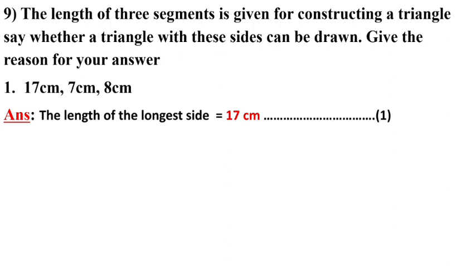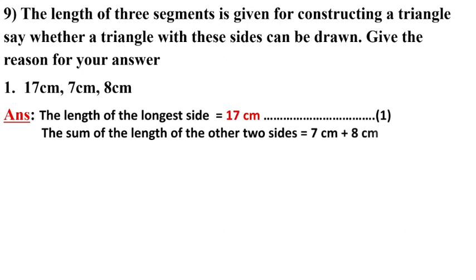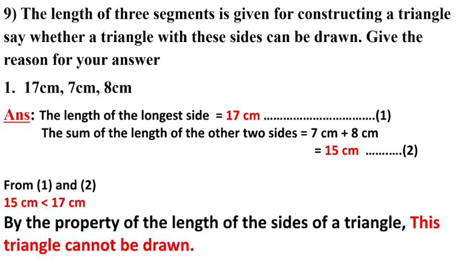Give the equation number 1. The sum of the other two sides are 7cm plus 8cm. Here we get 15cm. This gives equation number 2. From the first and second, we get 15 is smaller than 17. This means the second equation is smaller than the first equation. By the property of the length of the sides of a triangle, this triangle cannot be drawn.